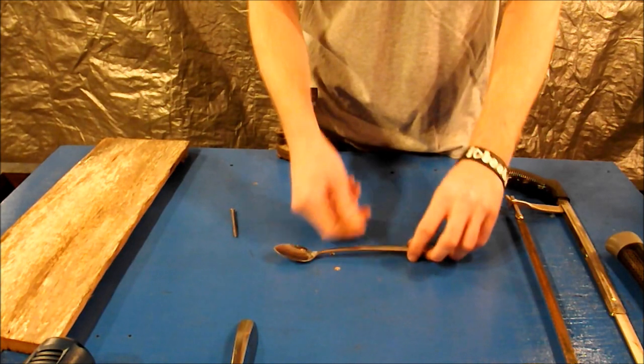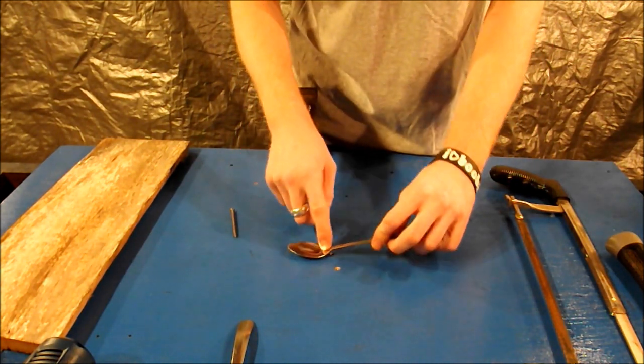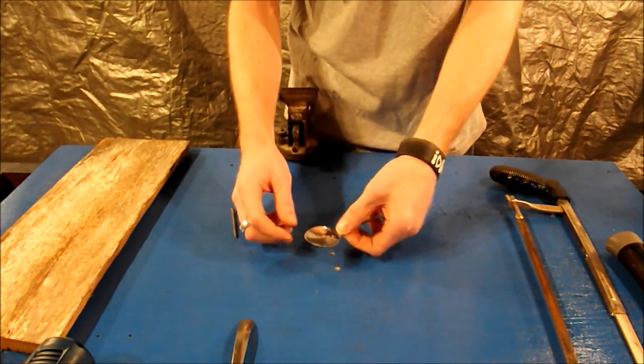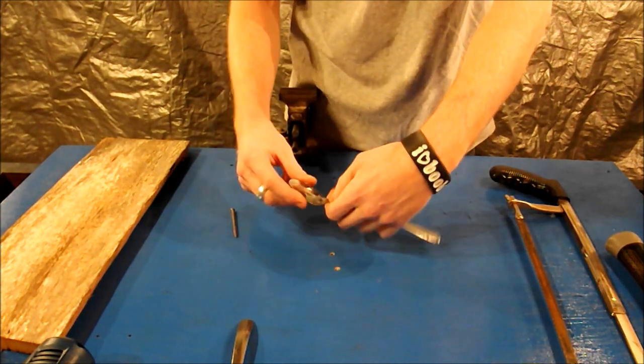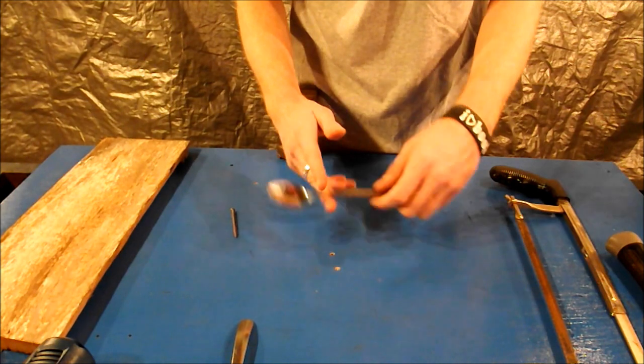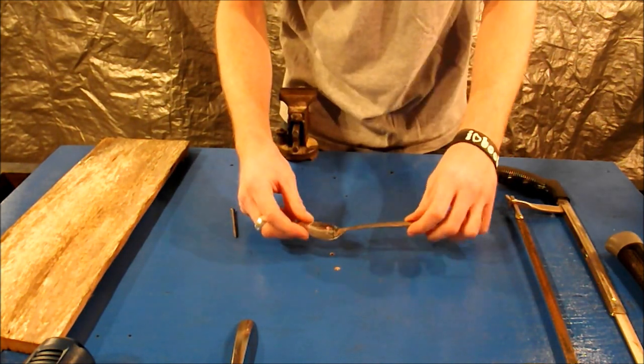You're going to want to start by drilling the holes and visualize what kind of lure you want to make. You want to cut something like that off and use that section there. You can also use the handle for another lure. We'll cover that in a different video.